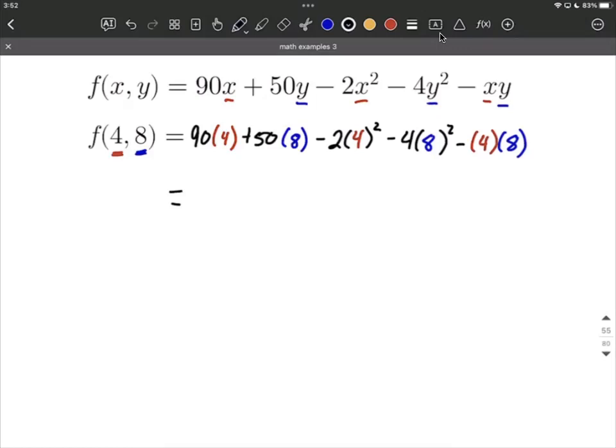So we have 90 times 4 for this first term, we can say is 360 plus 50 times 8 makes 400. Now on this one, I'm going to go ahead and square the 4 to get 16, and think 16 times 2 makes minus 32 for this term.